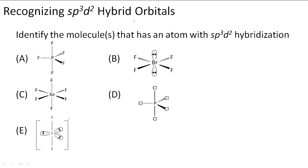Recognizing sp3d2 hybrid orbitals. We need to identify the molecule or molecules that has an atom with sp3d2 hybridization. We're looking for the central atom — P, Br, Xe, I, or P — that has sp3d2 hybridization. This means the atom has 6 orbitals. We have to count up the lone pairs and the number of bonds to figure out how many orbitals we have.